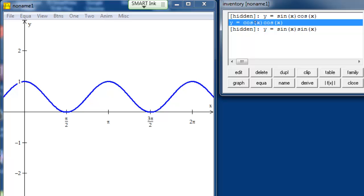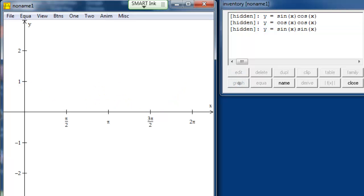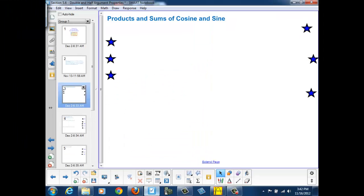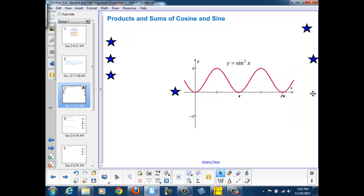So, let's hide the cosine squared, and bring out sine squared. This also looks like a sinusoid, so let's pull out the sine squared graph.